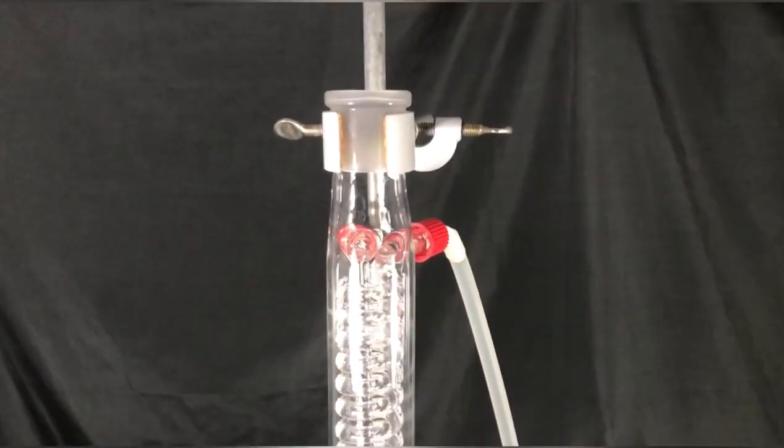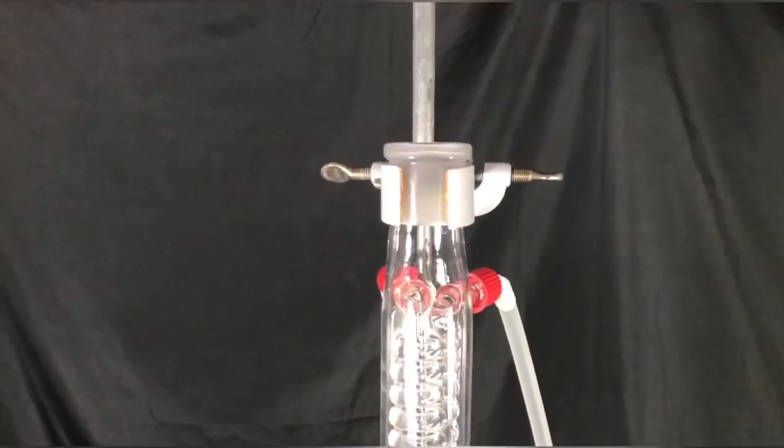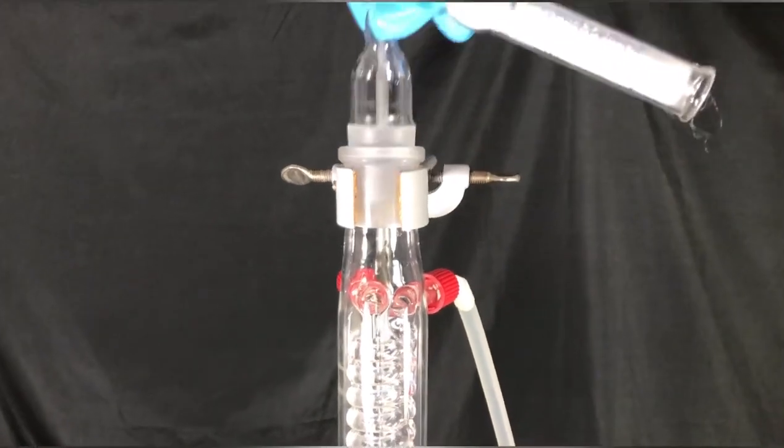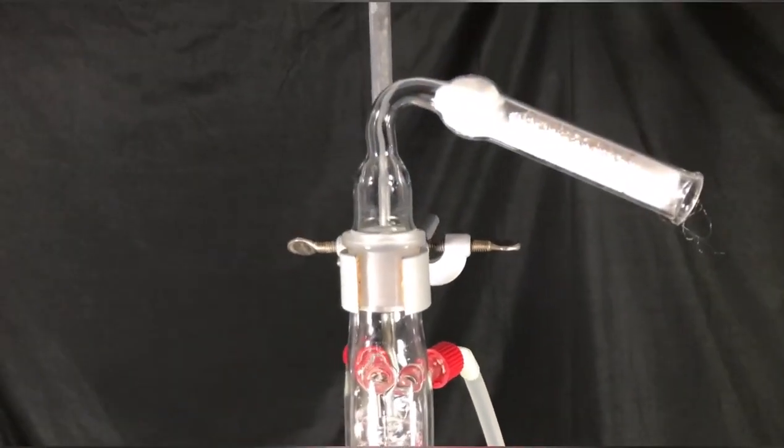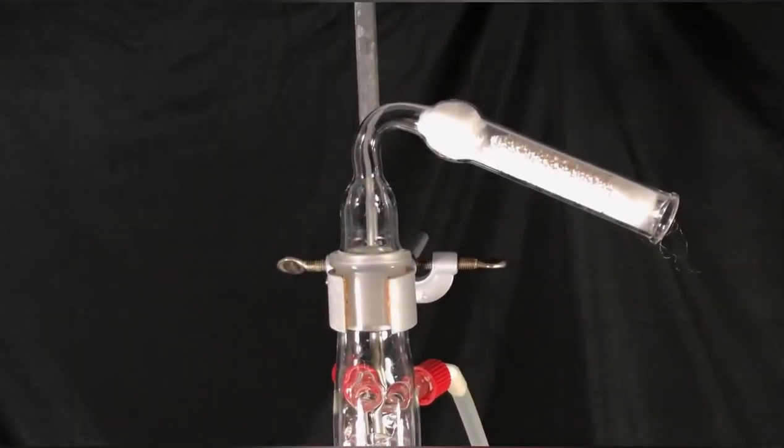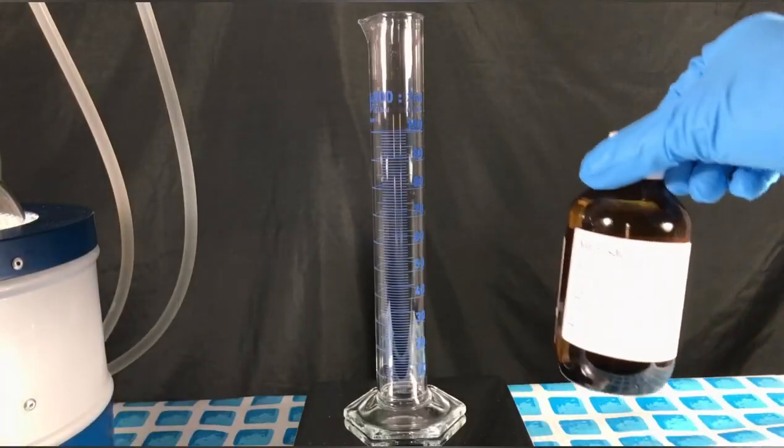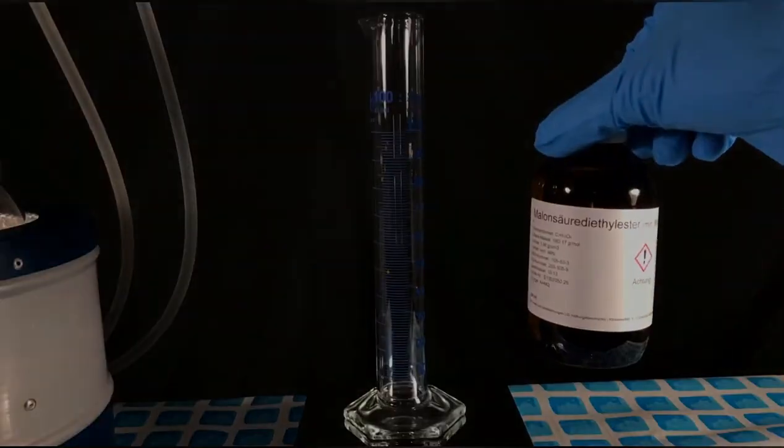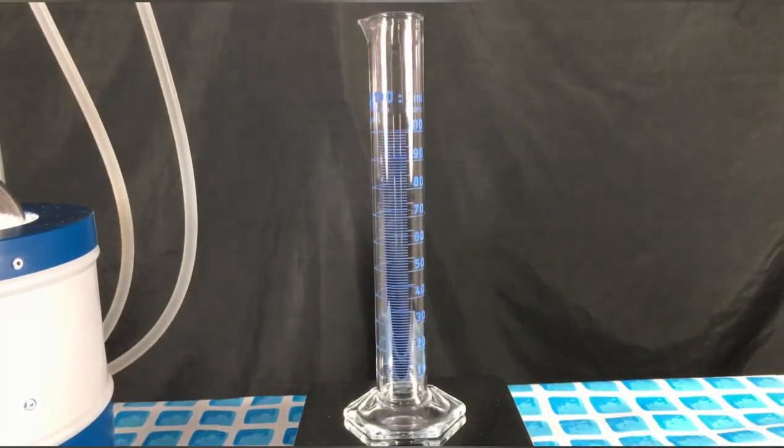It took approximately 10 minutes for all of the sodium to dissolve. When the sodium had dissolved, the gas outlet tube was switched out for a drying tube. The drying tube is filled with calcium chlorate to prevent any water from entering the apparatus. Any water present will decrease the yield, therefore the ethanol also has to be as dry as possible.